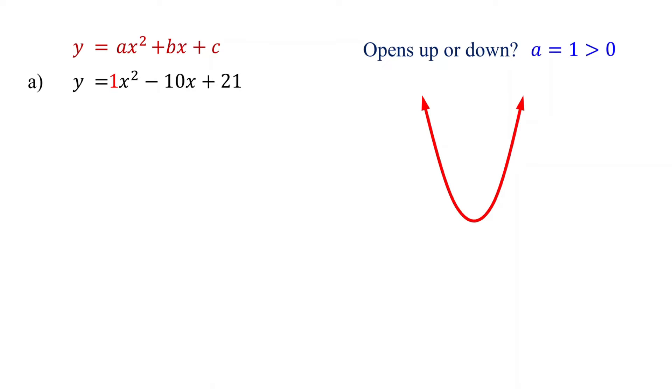When the parabola opens upward, the quadratic function has a minimum point, which is the vertex of the parabola. So our next step is to find the vertex.